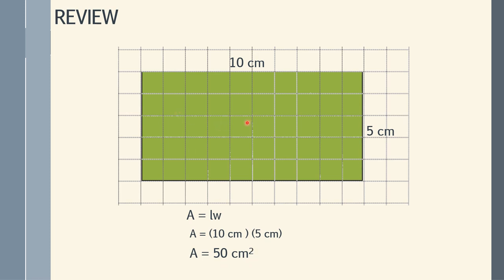If you look at the figure, area is the number of squares in a flat surface. If you count the squares on top, that is 10 — you have 1, 2, 3, 4, 5, 6, 7, 8, 9, 10. So that's 10, and how many rows of 10? 1, 2, 3, 4, 5. So that's five groups of 10, which is just like multiplying 10 times 5. That's why the shortcut is length times width. If there's no drawing, you can just multiply the length and the width.